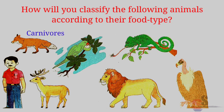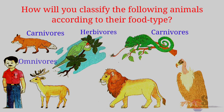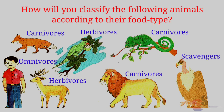How will you classify the following animals according to their food type? Fox — Carnivorous. Parrot — Herbivorous. Chameleon — Carnivorous. Human being — Omnivorous. Deer — Herbivorous. Lion — Carnivorous. Vulture — Scavenger.